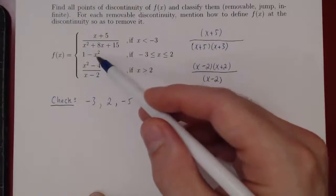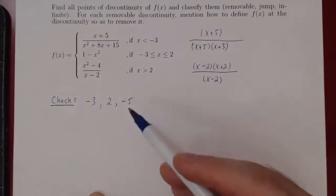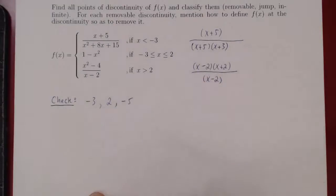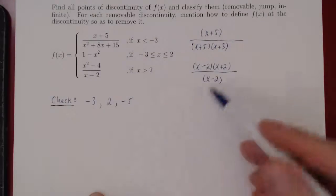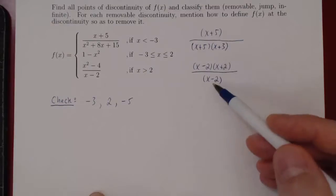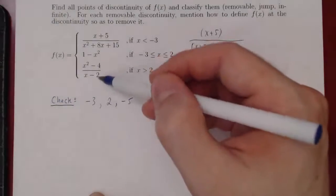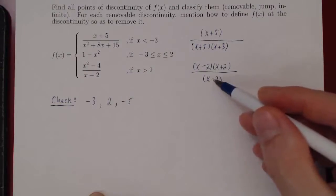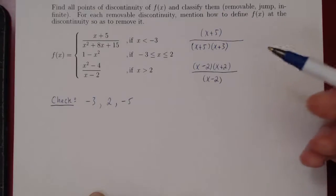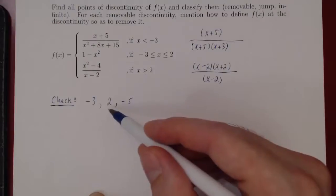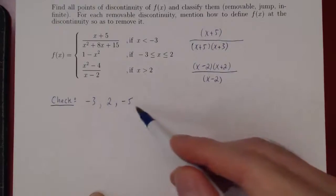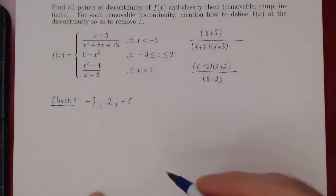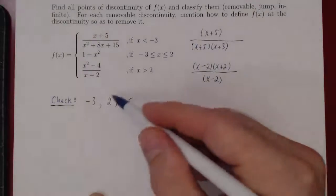The second piece, 1 minus x squared, is a polynomial, so for any given value of x you can always compute it — no possible discontinuity there. The third piece factors as x minus 2 times x plus 2 over x minus 2. Since we have division by x minus 2, we have to check whether x equals 2 is a point of discontinuity, but 2 is already in our list. So we now have an exhaustive list of possible points: x equals negative 5, negative 3, and 2.